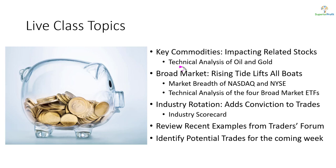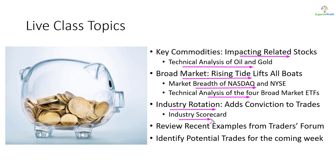As usual, we look at Oil and Gold using technical charts. They tend to impact related stocks. In general, when swing trading stocks, we like to align them with the market's direction. We will study that using NASDAQ and NYSE market breadth and market ETFs technical analysis. In addition to aligning the trades with market direction, we like to align them with industry strength. We will study that using the industry scorecard. Along the way, we may review some recent examples from the traders forum. You may also visit the traders forum from our homepage — it is open to the public — and we will look for potential trades for the coming week.